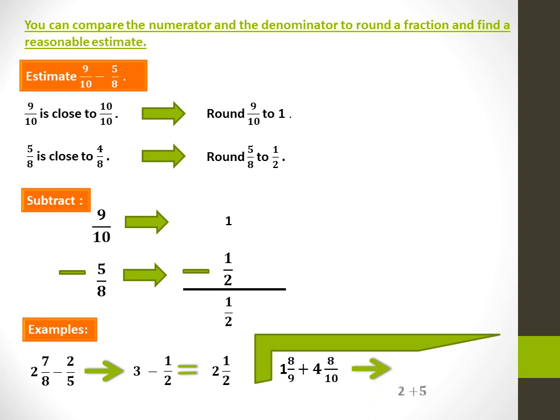Now let's estimate 1 8 over 9 plus 4 8 over 10. Both 8 over 9 and 8 over 10 are close to 1, so 1 8 over 9 is rounded to 2 and 4 8 over 10 is rounded to 5. 2 plus 5 is equal to 7.